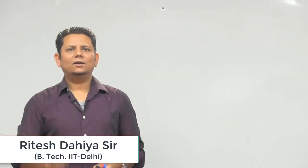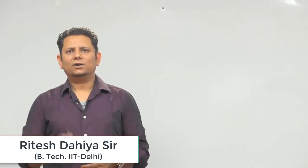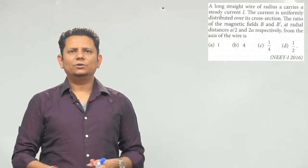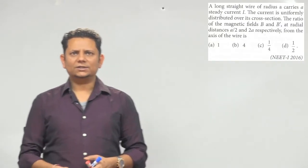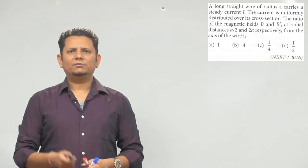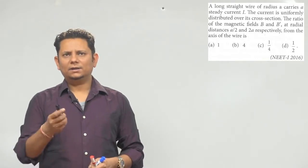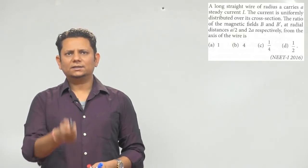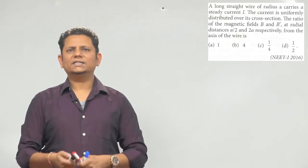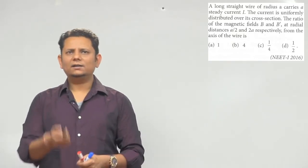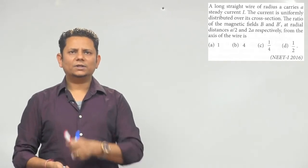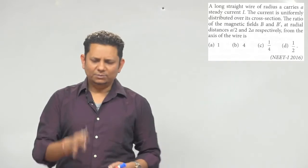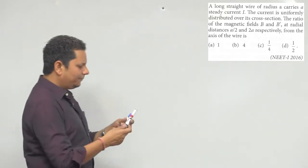Next question: a long straight wire of radius a carries a steady current I. The current is uniformly distributed over its cross section. सवाल है ratio of magnetic field B and B' at radial distances a/2 and 2a respectively from the axis of the wire कितना होगा। Options हैं: 1 is to 1, 4 is to 1, 1 is to 4, या फिर 1 by 2. Simple सवाल है, basics clear होने चाहिए।